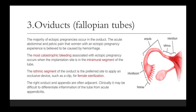The majority of ectopic pregnancies occur in the oviduct. The acute abdominal and pelvic pain that women with an ectopic pregnancy experience is believed to be caused by hemorrhage. The most catastrophic bleeding associated with ectopic pregnancy occurs when the implantation site is in the intramural segment of the tube. The isthmic segment of the oviduct is the preferred site to apply an occlusive device such as a clip for female sterilization. The right oviduct and appendix are often adjacent, and clinically it may be difficult to differentiate inflammation of the tube from acute appendicitis.